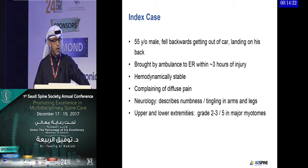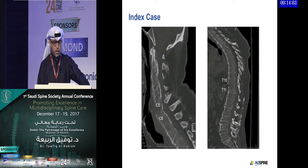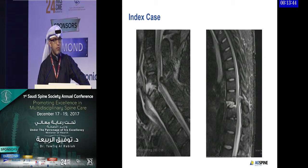He was hemodynamically stable, complaining of diffuse pain over his back as well as his neck. Neurological symptoms included numbness and tingling in both arms and legs. Upper and lower extremity examination showed two to three out of five in major myotomes. He has injuries of both the cervical and thoracolumbar spine, with a very significant injury at C5-C6 levels, and clear MRI findings corresponding with the initial CT scans.